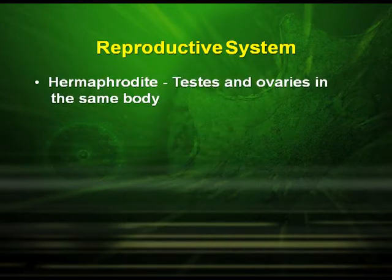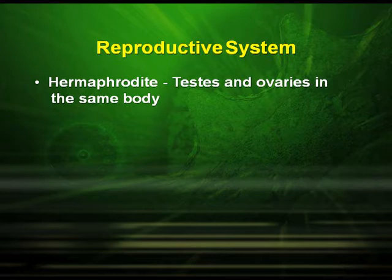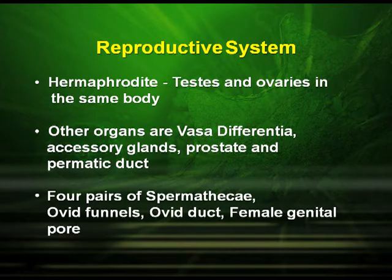Earthworms are hermaphrodite animals — the testes and ovaries are found in the same body. The other organs of the reproductive system are the vas deferentia, the accessory glands, the prostate and spermatic duct, four pairs of spermathecae, oviducal funnels, oviduct, and the female genital pore.